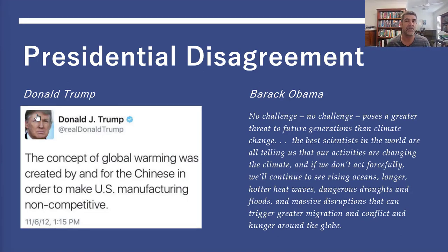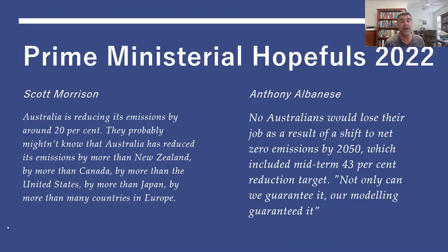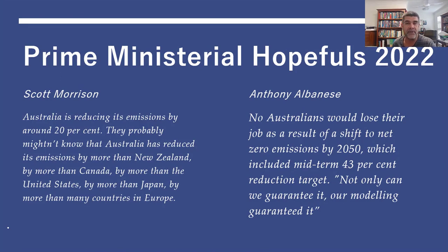In his State of the Union address, Barack Obama also had a view about climate science and climate change. These are the sorts of things we need to look at and weigh up — not only the varying views that people can have, but also how influential those views can be when held by people in positions of great power and influence. At the moment in Australia, we're leading into our federal election, with the current prime minister Scott Morrison and Labor candidate Anthony Albanese.